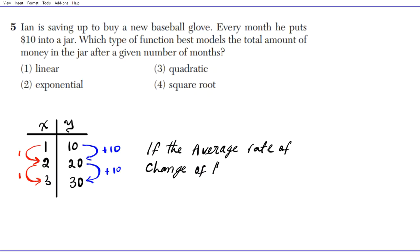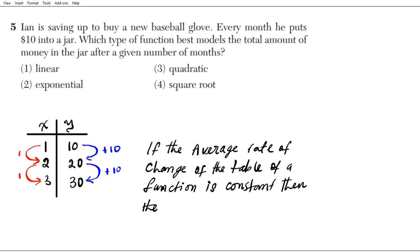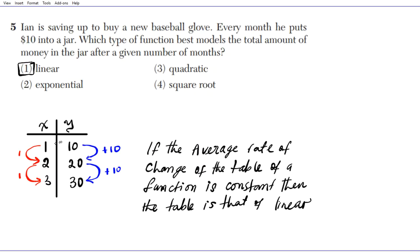If the average rate of change of a function is constant, then the function is linear. Linear means you have a constant growth rate, and that constant growth rate is known as the slope. The slope is always the same for a straight line or a linear function.